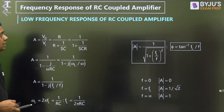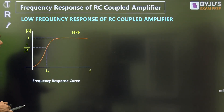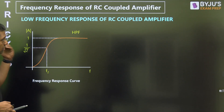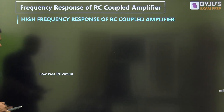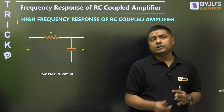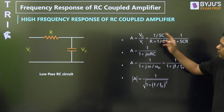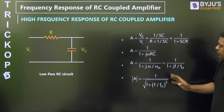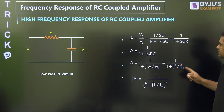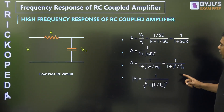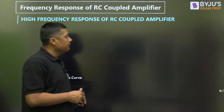At high frequency, the amplifier behaves as a low-pass filter. This is the circuit for the low-pass filter. It is called a lagging circuit because we get a negative phase shift, given by minus tan⁻¹(F/F_H), where F_H is the 3 dB cut-off frequency.